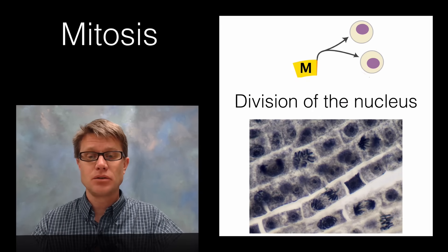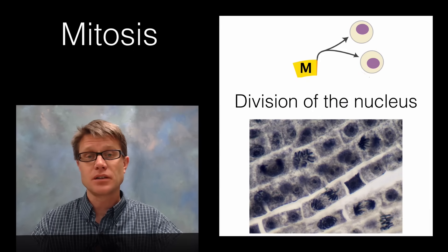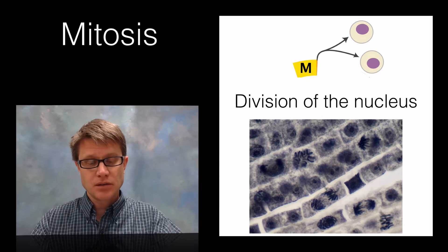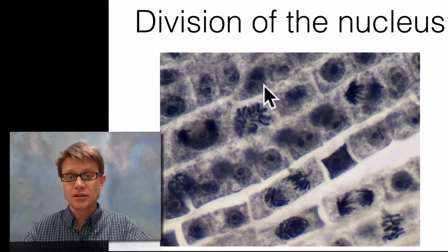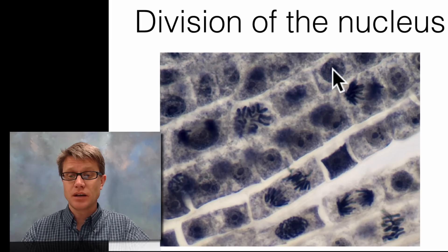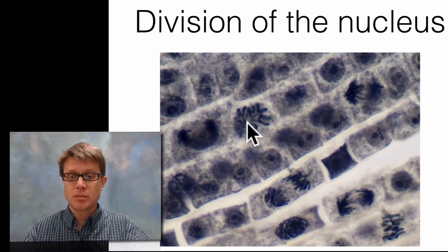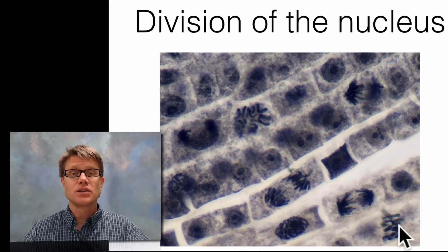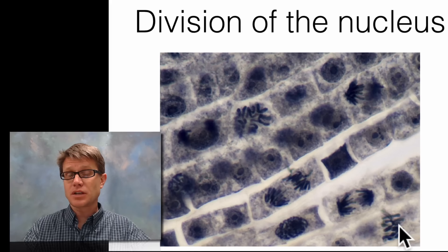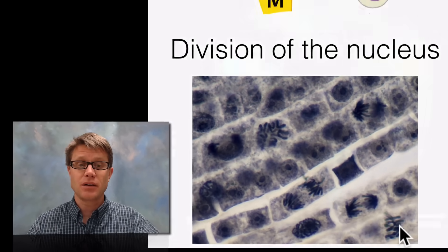A classic lab in biology is to look at cells undergoing mitosis. Here we're looking at onion cells with dyed chromosomes. Most of these cells don't have much going on — you just see the nuclei inside, so they're in interphase. But some are going through division: this one would be in prophase, this would be anaphase, and that's metaphase. Since cells spend less time in mitosis, fewer are represented in any one picture.